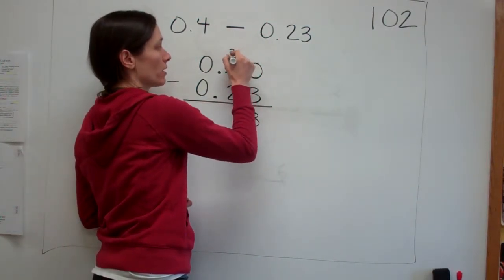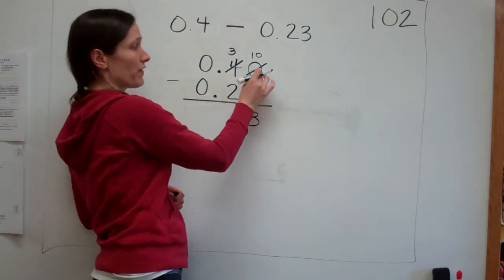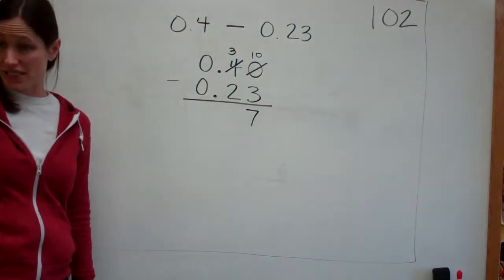I have to borrow one, bring it over, and so this will become 10, right? So 3 from 10 is 7, right? Not 3. Do you see how that would be different?